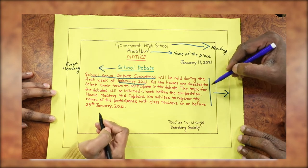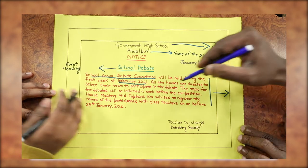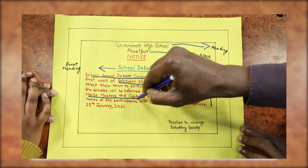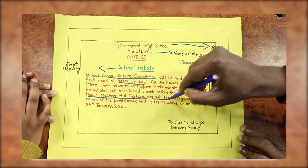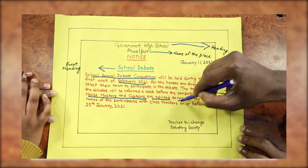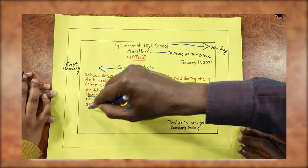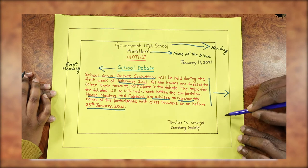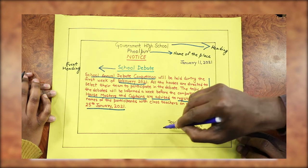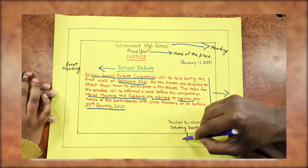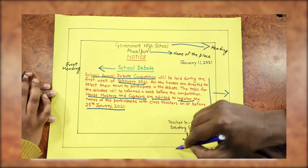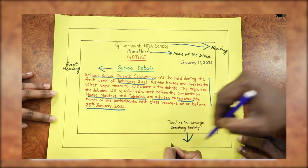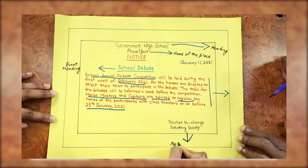What is expected of the people who are concerned with the notice? The house masters and captains of the houses are advised to register by 25th January 2021. And this final element is the teacher in charge who has given the notice — that is the notice giver.